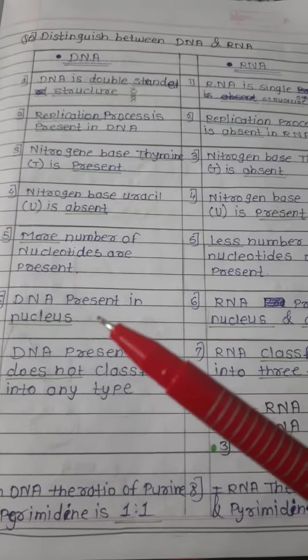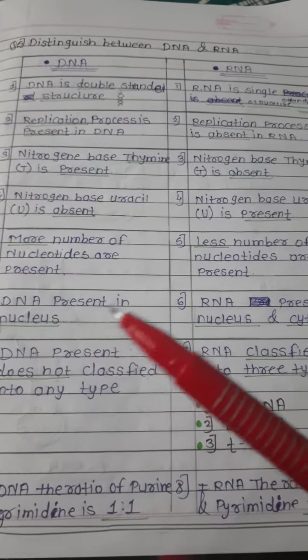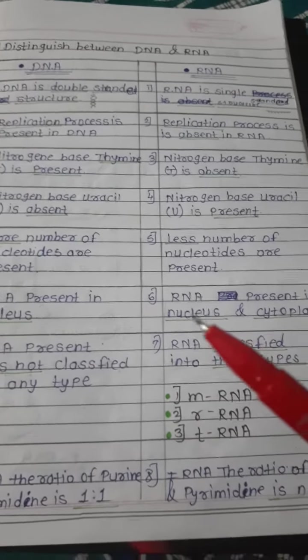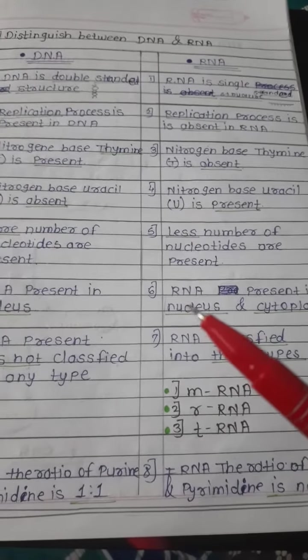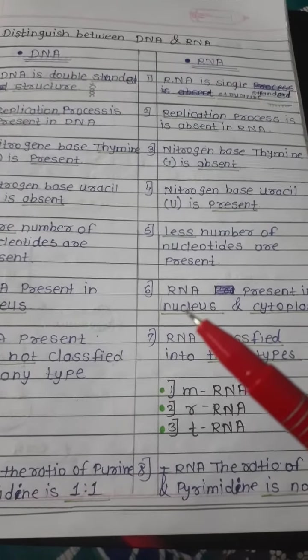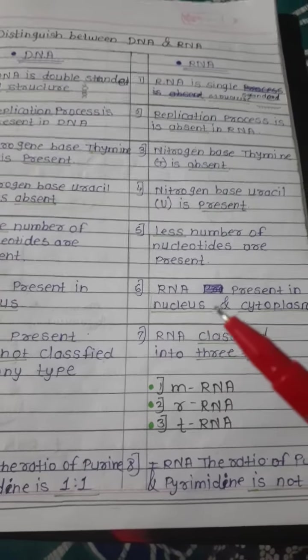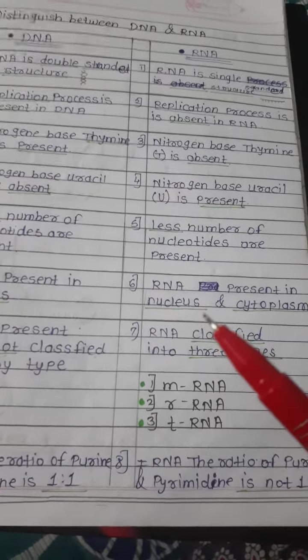DNA is present in the nucleus, while RNA is present in the nucleus as well as the cytoplasm.